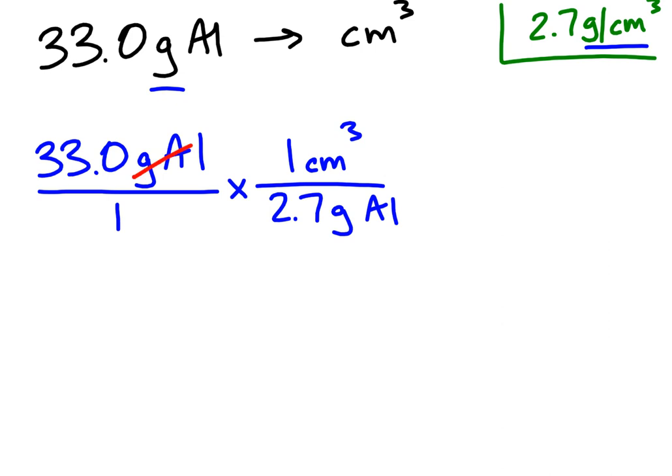My grams of aluminum cancel out. This is volume or cubic centimeter of aluminum. This is my unit that I have left over. When I do my math, I'll do 33.0, and I'm going to be dividing by 2.7, getting 12.22 repeating twos. I need three sig figs.